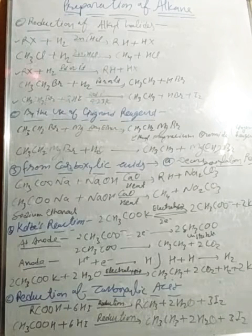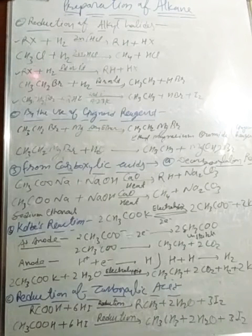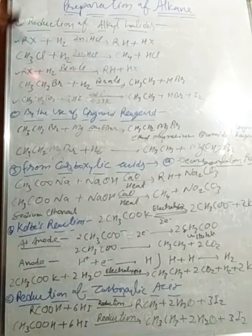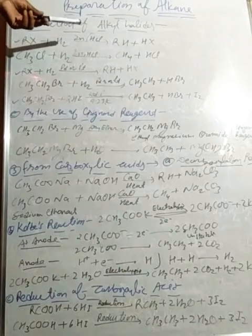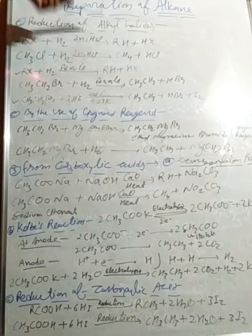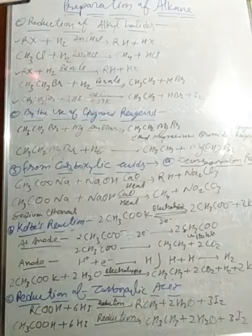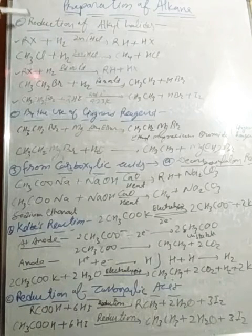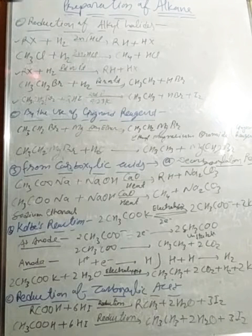Reduction of alkyl halides means in this reaction there will be reduction of alkyl halides. By adding alkyl halides with hydrogen, they will form alkane. That is called reduction of halides. Here is the general equation for the reduction of halides.